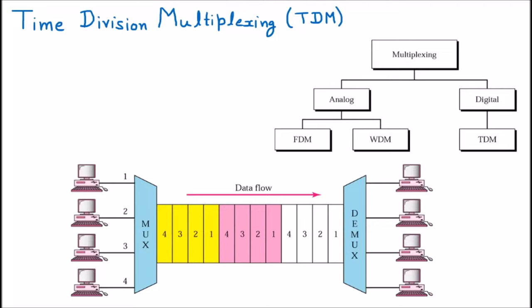We are starting our topic which is time division multiplexing. In multiplexing, we have seen that under the digital technique we are having TDM. Under the analog technique, we are having FDM which is frequency division multiplexing and WDM which is wave division multiplexing. Here we are discussing the digital technique, that is time division multiplexing. TDM is a digital technique.